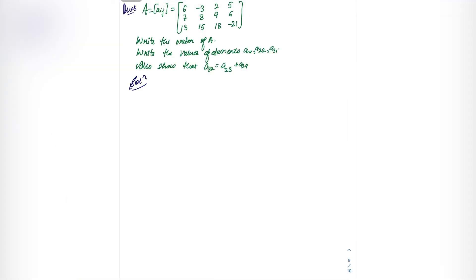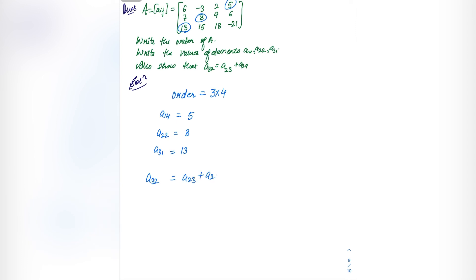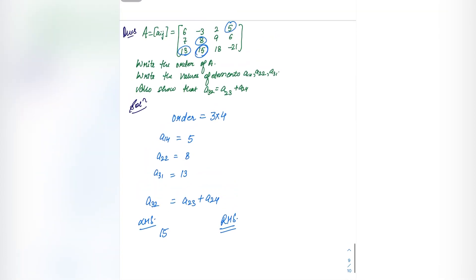The last question: a matrix aij is given. Write the order of A — the number of rows is 3 and number of columns is 4, so the order is 3 into 4. Find a14 = 5 (first row, fourth element). Find a22 = 8 (second row, second element). Find a31 = 13 (third row, first element). Also show that a32 = a23 + a24: LHS a32 = 15 (third row, second element). RHS: a23 = 9 and a24 = 6, and 9 + 6 = 15. So both sides are equal, and we have shown they are equal. This completes the basic concepts of matrices.